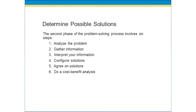The second phase is determining possible solutions, and this process can be exciting. It involves six separate steps. The first is to analyze the problem — we have to define and ensure we know what the problem is. By analyzing it, we break it down to understand the causal effect and all the parts and pieces. The problem may involve multiple sub-problems, so you need to analyze it to a depth and breadth that allows you to address it.